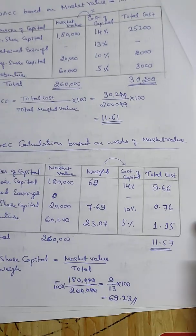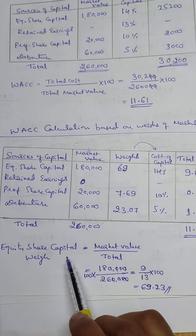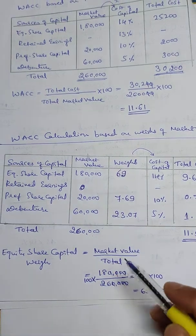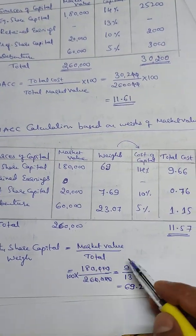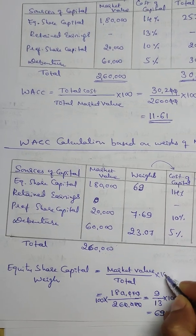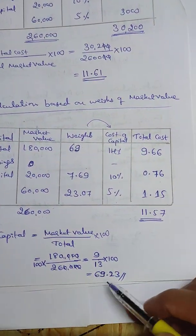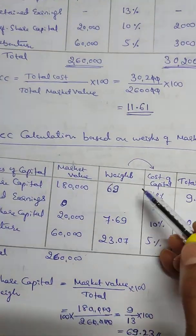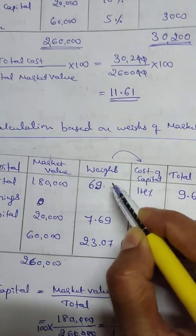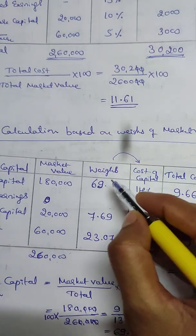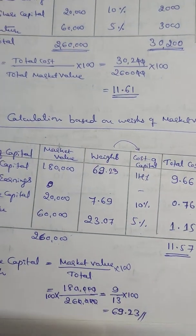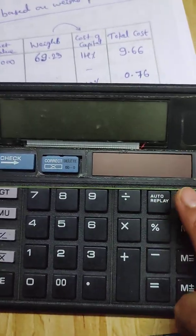There is a small variation. For equity share capital, the market value weight continues as market value divided by total into 100, giving 69.23%. You can expect some small variations here in the calculation.